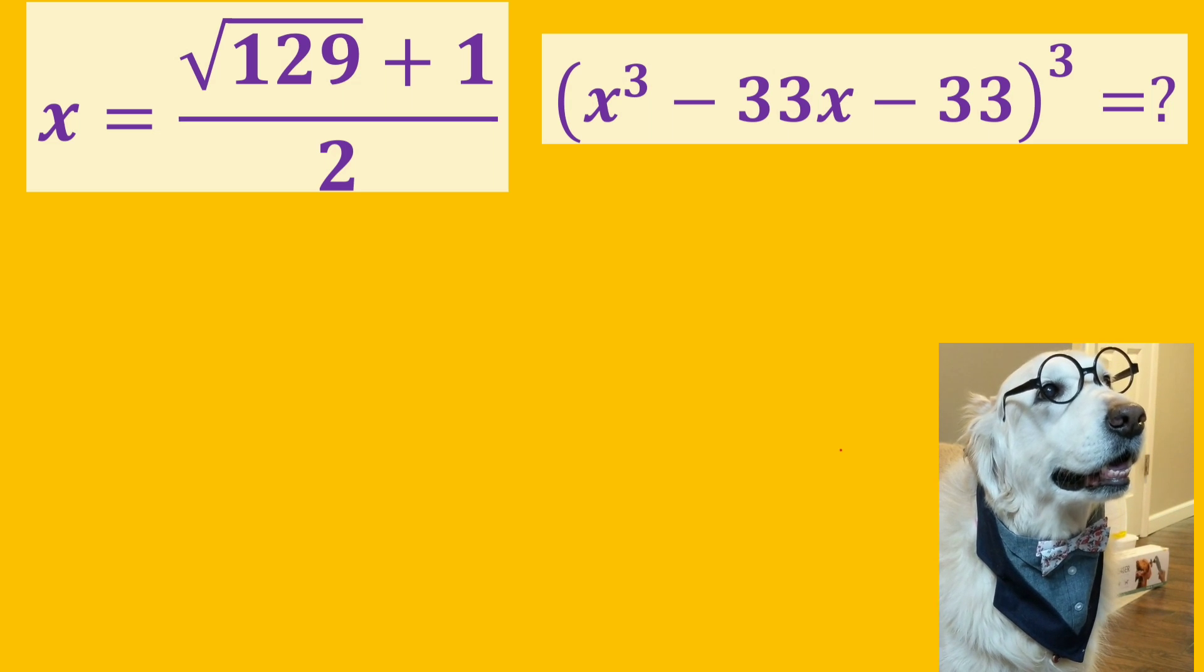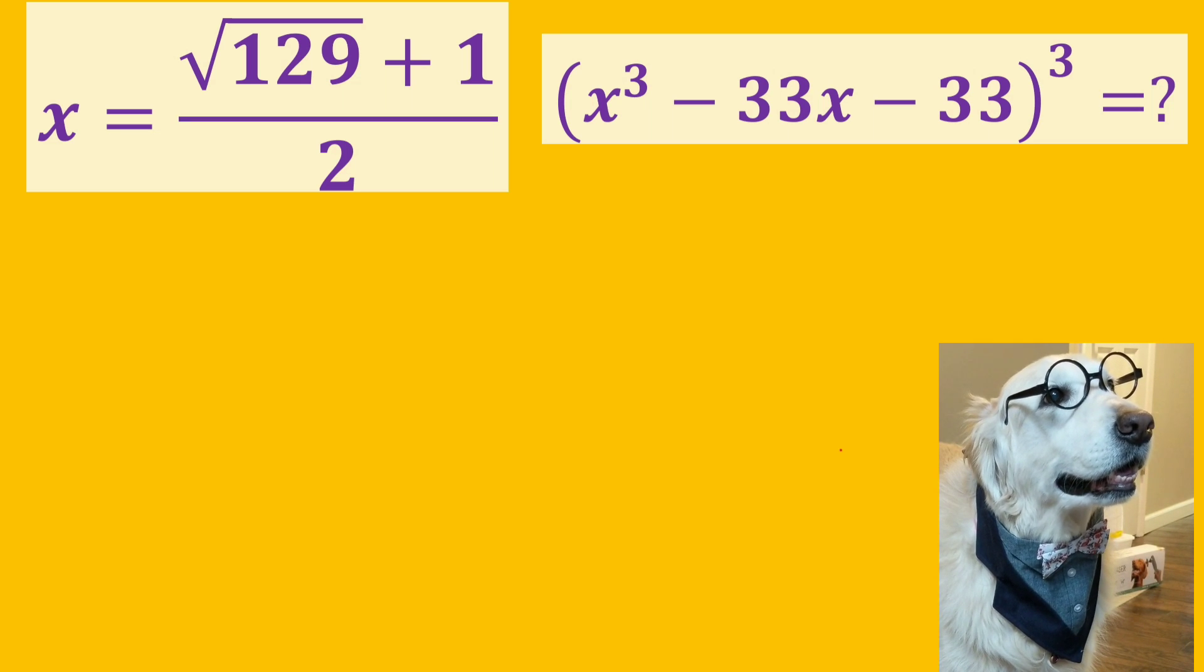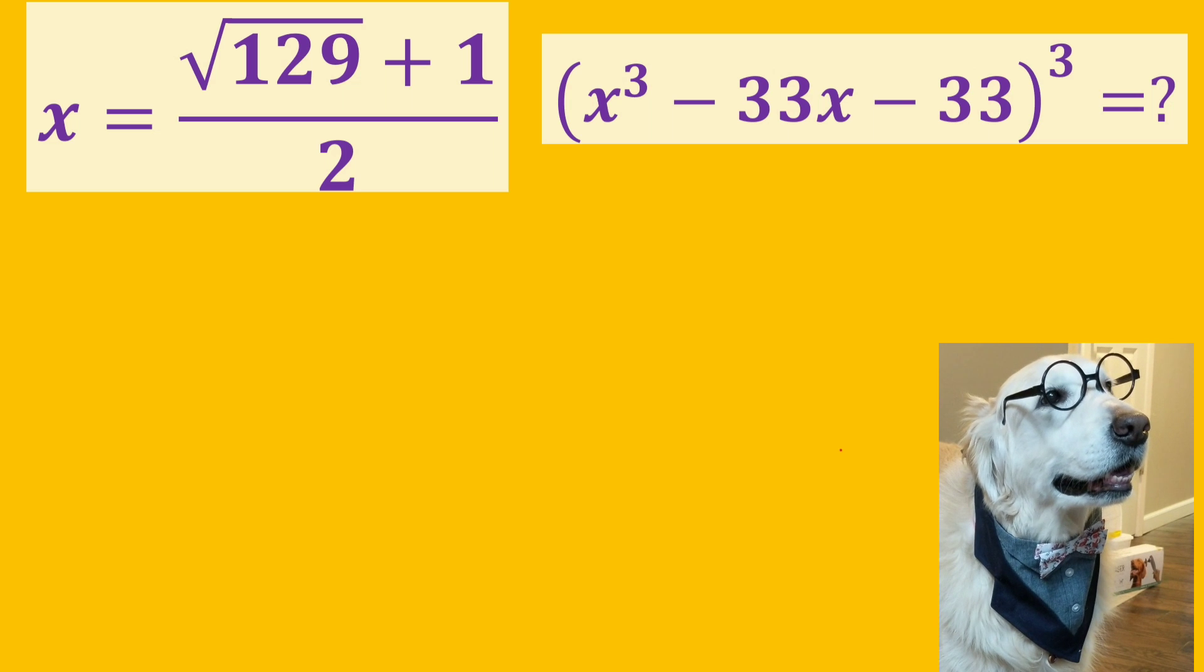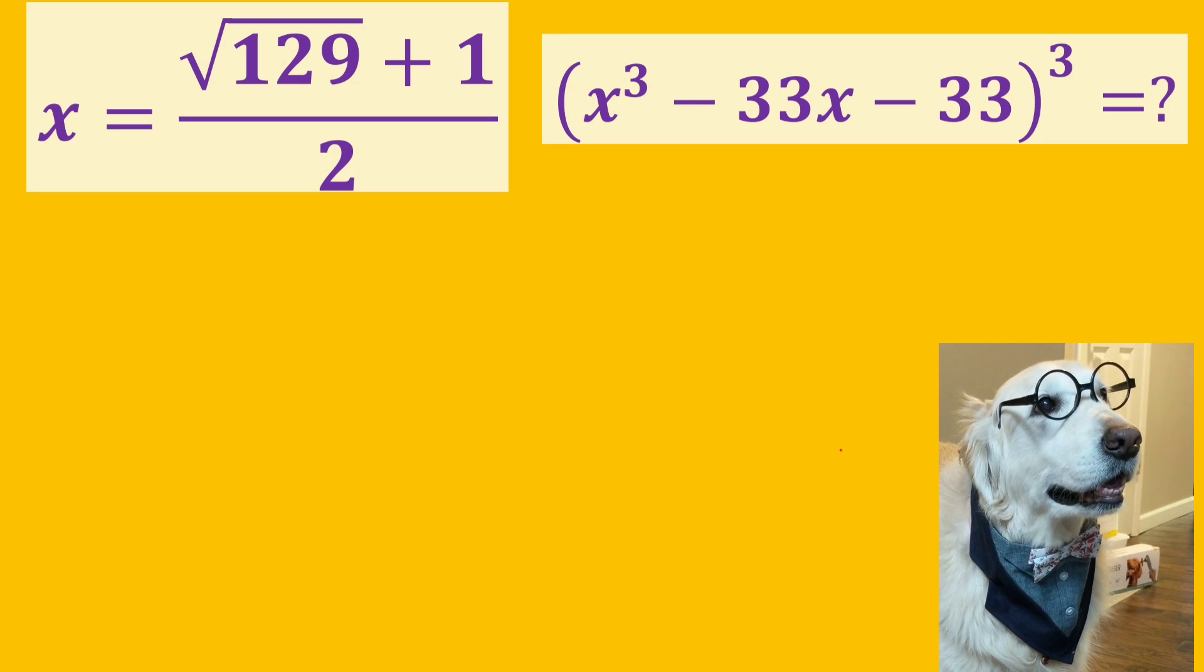Okay, now we have x is equal to square root of 129 plus 1 all over 2 and we are asked to find the third power of x cubed minus 33x minus 33. Let's start to solve it.